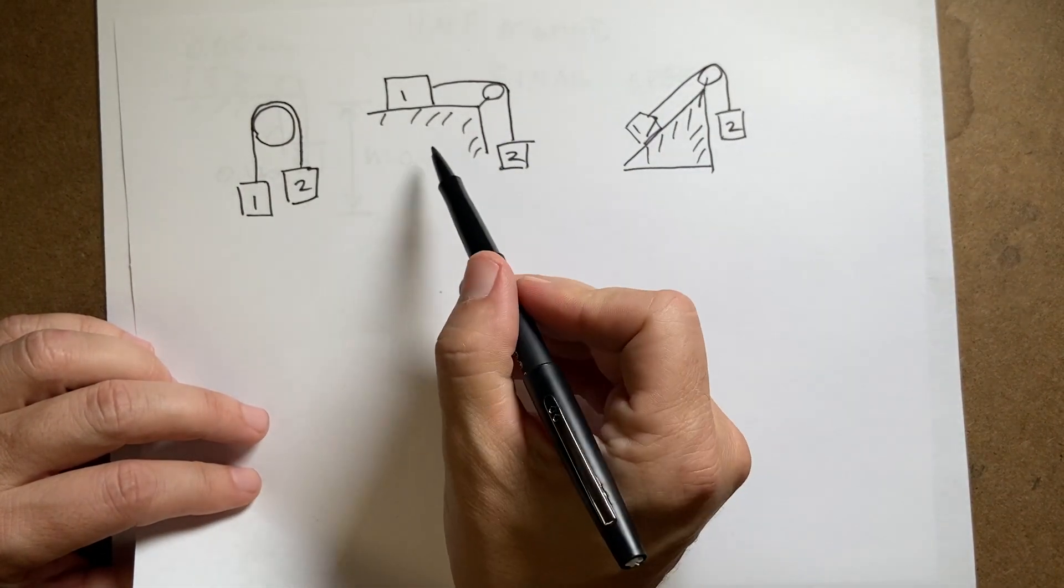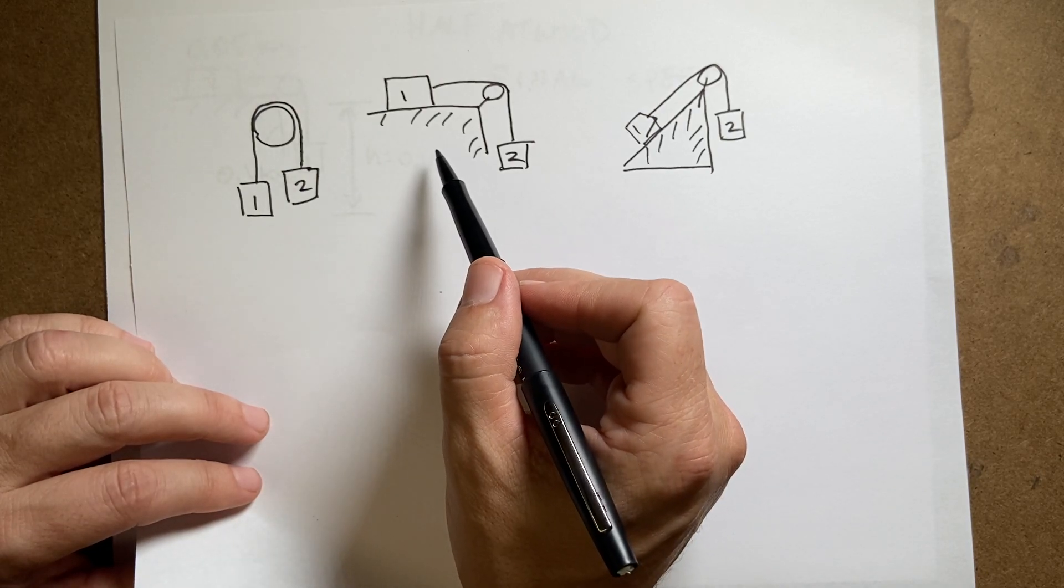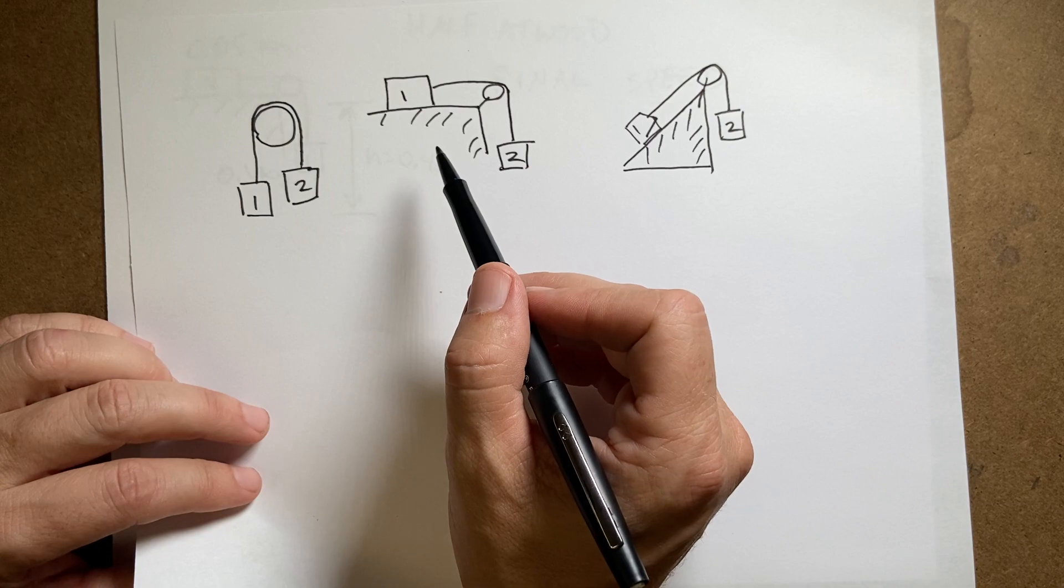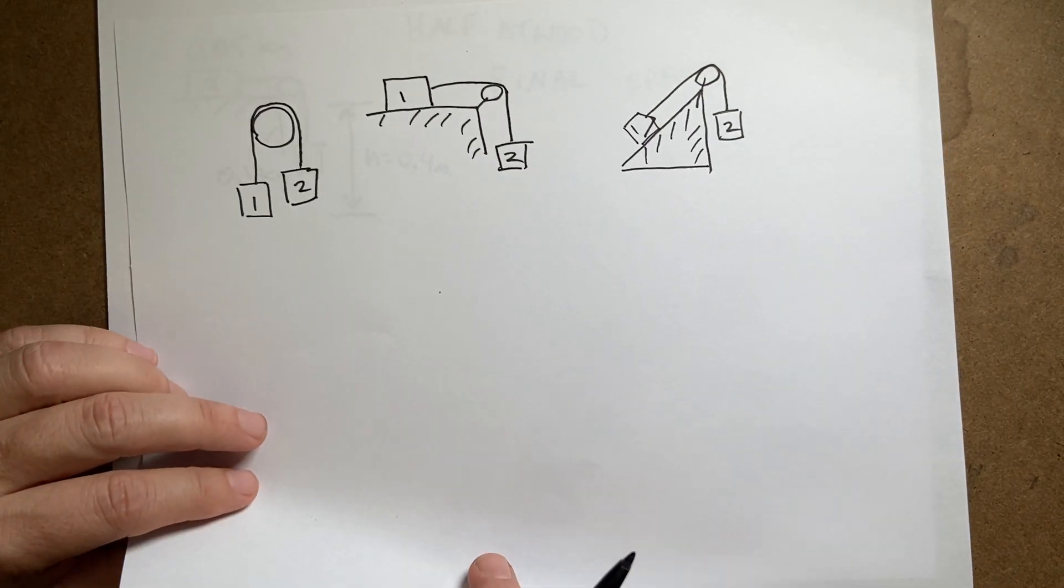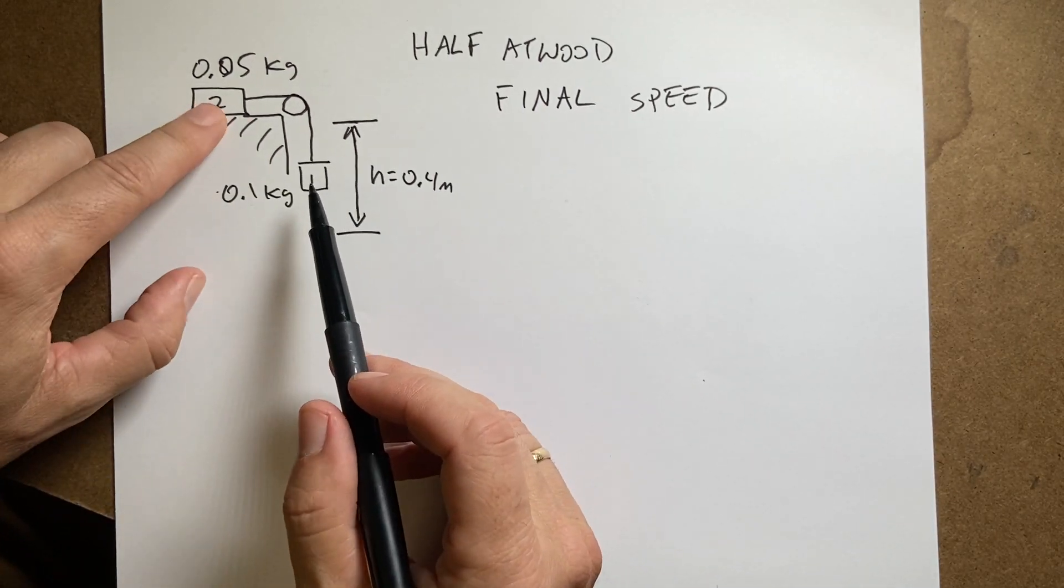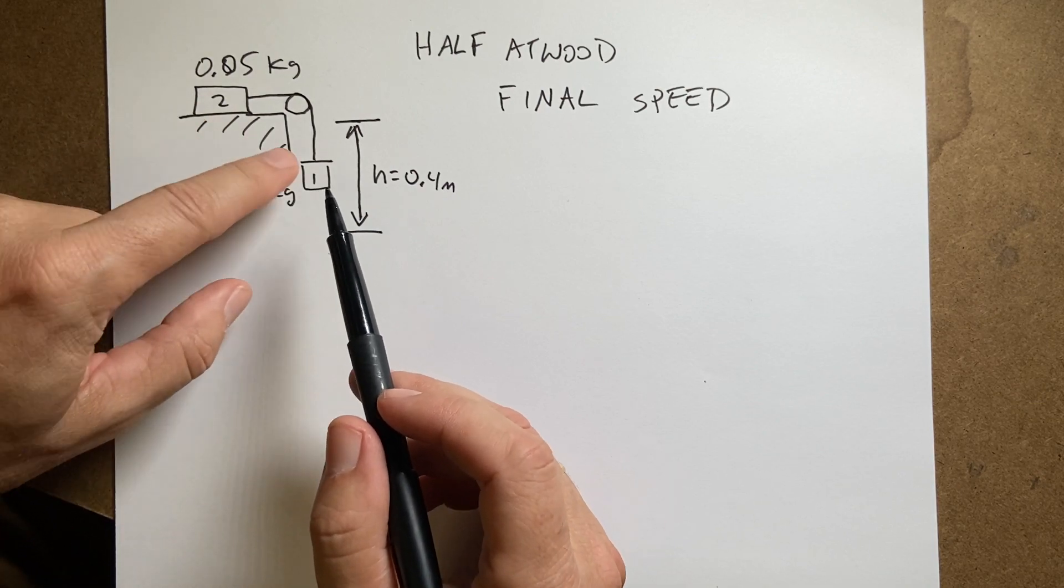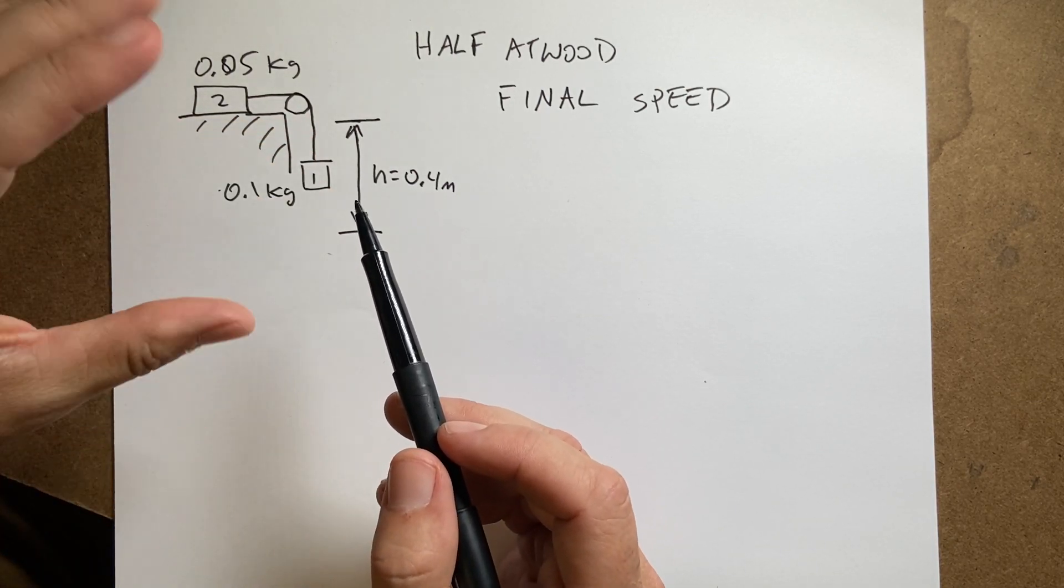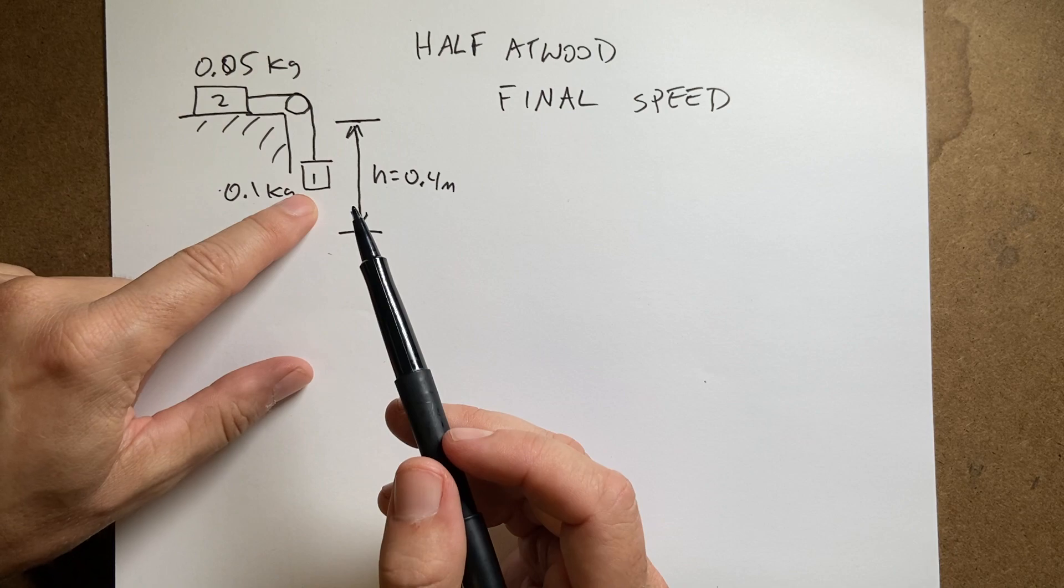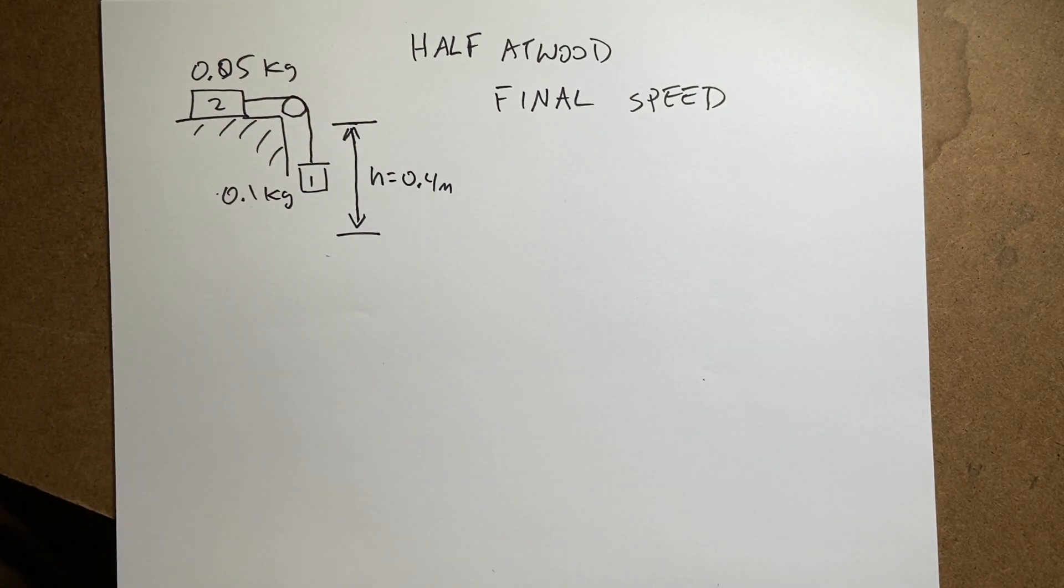Okay, so I'm going to go back to this one right here. And I want to do the same problem, but now I want to find the final speed if I release it from rest. So suppose I have the same masses I've been using: this is 50 grams and 100 grams, frictionless table, and it starts from rest. I want to find out how fast it's going after it falls 0.4 meters. I just made up those numbers.